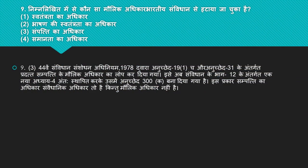Question hai: nimlikhit mein se kaun sa maulik adhikar Bhaaratiiya Samvidhan se hataaya ja chuka hai? Options hain: swatantrata ka adhikar, bhashan ki swatantrata ka adhikar, sampatti adhikar, samantha adhikar. Iska right answer hai number 3 — Sampatti Adhikar. 44vein Samvidhan Sansodhan Adhiniyam 1978 dwara Anuched 19(1)(f) aur Anuched 31 ke sampatti ke adhikar ko lop kar diya gaya. Ise ab Samvidhan ke Bhaag 12 mein Anuched 300A ke tahat ek nayi vidhaik adhikar ke roop mein sthaapit kiya gaya hai. Iss prakar sampatti ka adhikar ek vaidhanik adhikar toh hai, kintu maulik adhikar nahi hai.